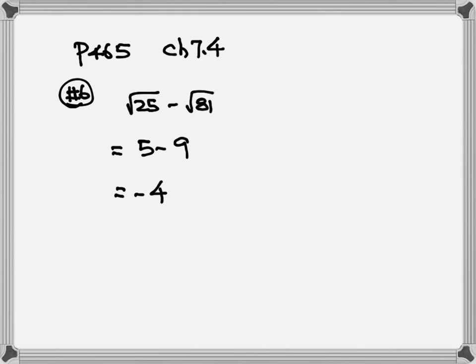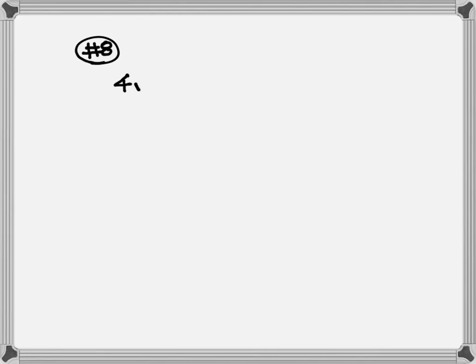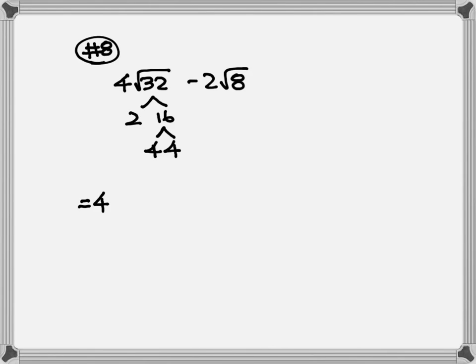Now let's look at number 8. We have 4 times square root of 32 minus 2 times square root of 8. Keep the 4 outside. Let's break down 32: 32 can break down to 2 and 16, and 16 can break down to 4 and 4. For square root we are looking for a pair — here's my pair of 4, so one 4 goes out and 2 is by itself, so that 2 stays inside. Minus 2, let's break down 8.